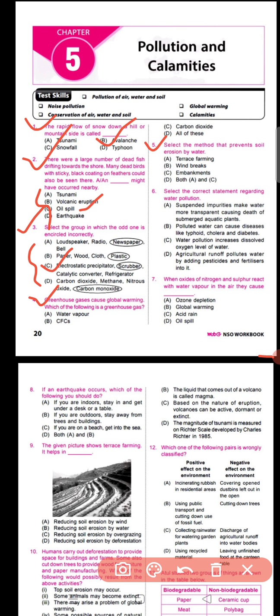Question number five says: select the method that prevents soil erosion by water. The correct option is D — both A and C — which include terrace farming and embankments as methods to prevent soil erosion by water.